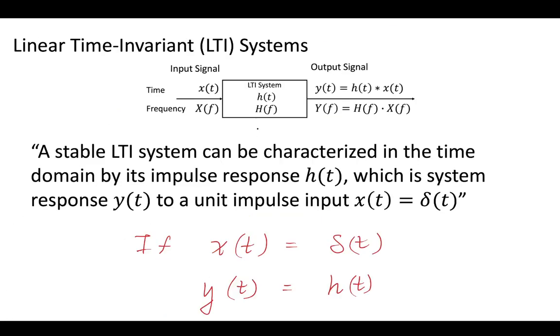Now recall, we like to think about our communication systems as being linear time-invariant systems, which have a certain set of properties. The stable LTI systems can be characterized in the time domain by the impulse response little h(t), which is system response y(t) to a unit impulse x(t) equals delta(t). This means that if you make an impulse as your input and it passes through our LTI system, then our output is going to be y(t) equals h(t).